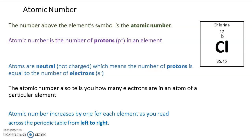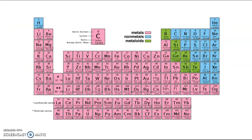Atomic number increases by 1 for each element as you read across the periodic table from left to right. Take a look at this periodic table. The first element has the atomic number of 1, the second element has the atomic number of 2, the third element has the atomic number of 3, and so on and so forth.